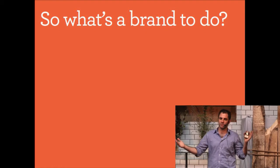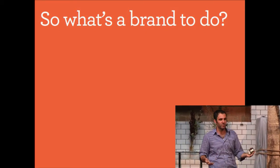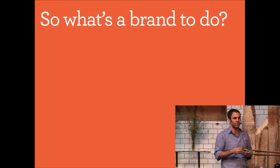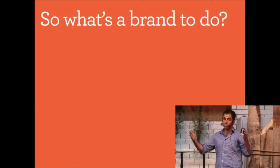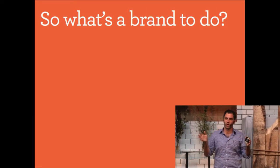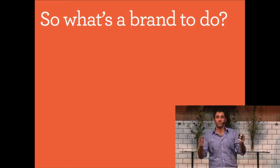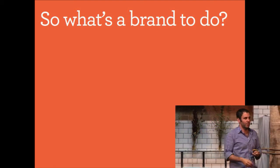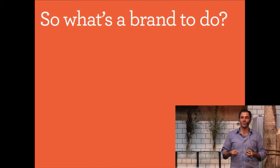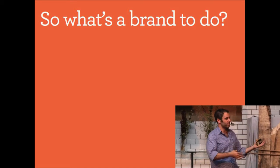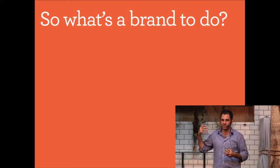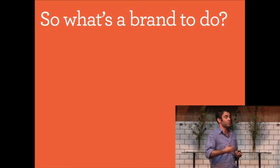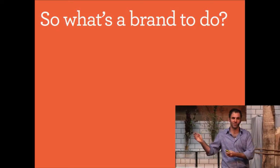When you get down to the brass tacks of what the shift to social means, it's really a shift from a world where brands used to create communication messages in 21-week cycles — the typical television commercial has a 21-week cycle from start to finish, and then they run it for about three months. 21 weeks between tweets is not a sustainable model for brands. They need to completely rework the way they communicate — in real time — and to do it in real time, they need to be able to consume in real time.